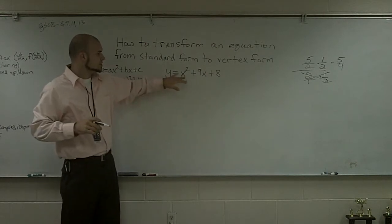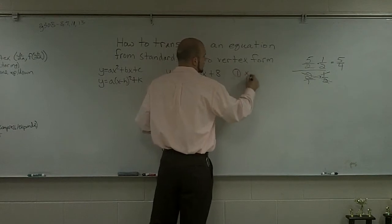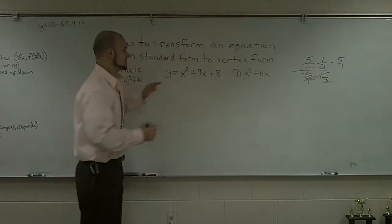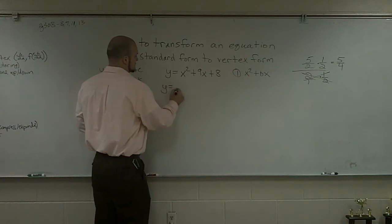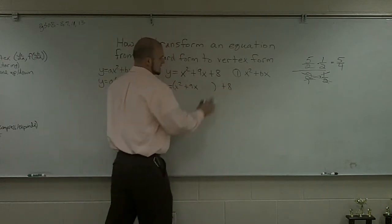When doing a problem like this, notice the first thing we're going to want to do is get the form x² plus bx. So initially what I'm going to do is say y equals x² plus 9x. I'm going to put a little parentheses around here, kind of separate this, and then put the plus 8.